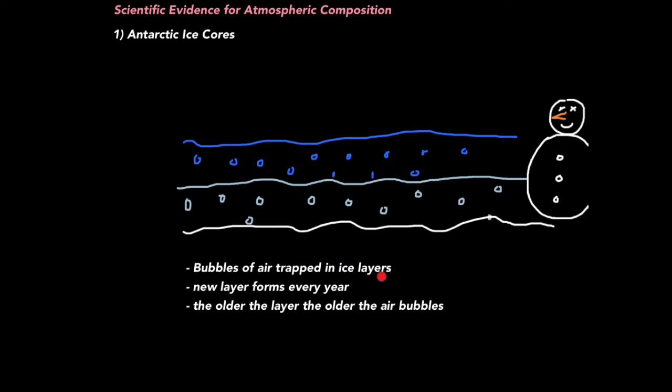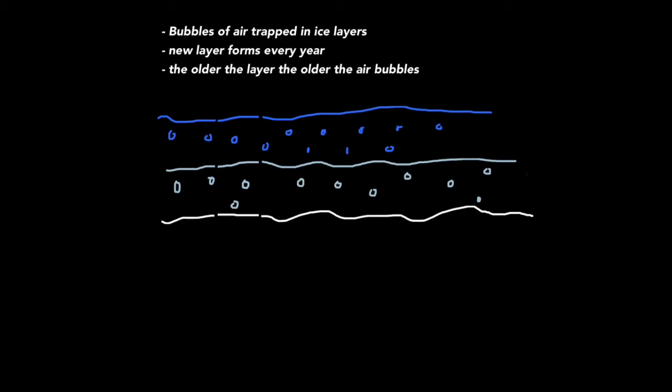So basically, bubbles of air are trapped in the ice layers, new layer forms every year, and the older the layer, the older the air bubbles. So what we need to do is take an ice core. So what you can do is drill down and take a cross-section of the ice. We simply remove it, and we analyse it.